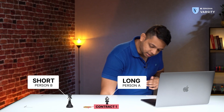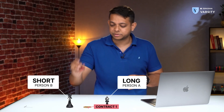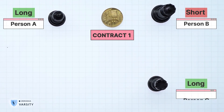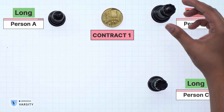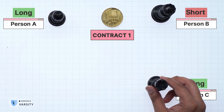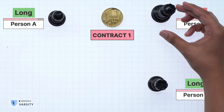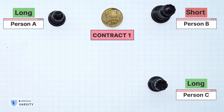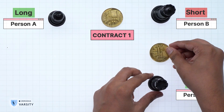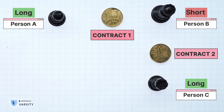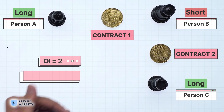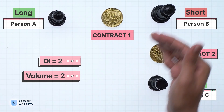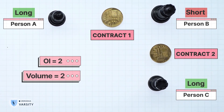Now let's suppose a third person comes — person C — and they do a transaction with person B. This person wants to buy and person B wants to sell, creating another contract. So in this case the OI is two because there are two contracts in existence, and the volume is also two because two transactions have taken place.